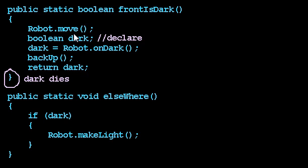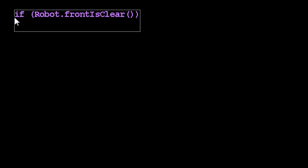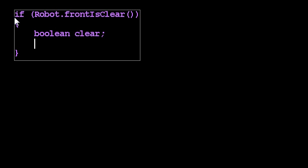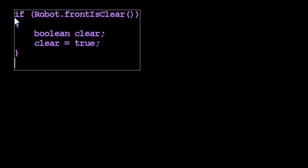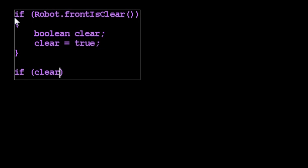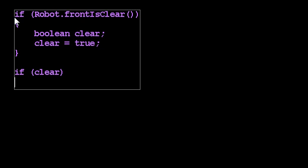So here's something we need to be careful of: just because we call a method that uses a variable doesn't mean we can use that variable outside the method, because the variable dies at the end of the method. Let's see another example. If the front is clear, so we're in the middle of some method, we say if the front is clear, then the variable clear gets the value true. And at some point later, we say: if clear, move.